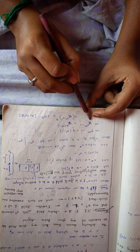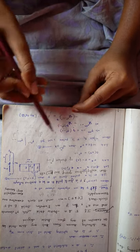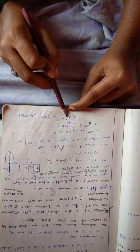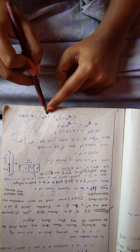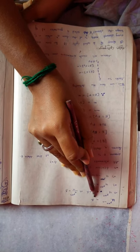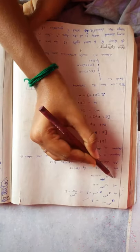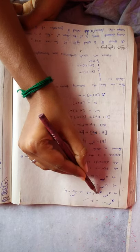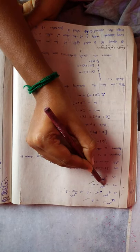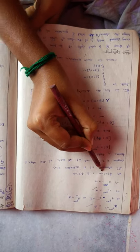Now u^(p^(mn) - 1) = u^(q·(p^n - 1)) = (u^(p^n - 1))^q = 1^q = 1, using equation 2. Therefore u^(p^(mn) - 1) = 1, which means u^(p^(mn)) / u = 1, so u^(p^(mn)) = u. This implies u^(p^(mn)) - u = 0, which means f(u) = 0. Also f(0) = 0. So all elements of F satisfy f(x).